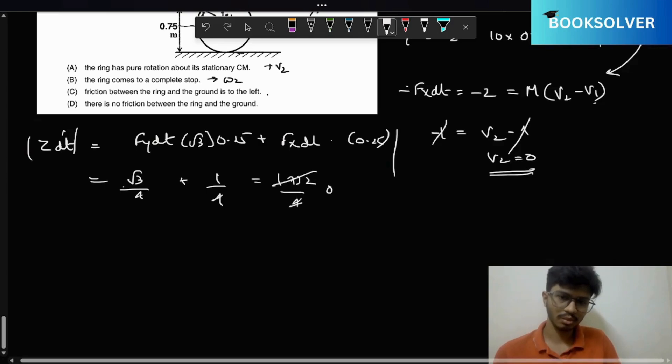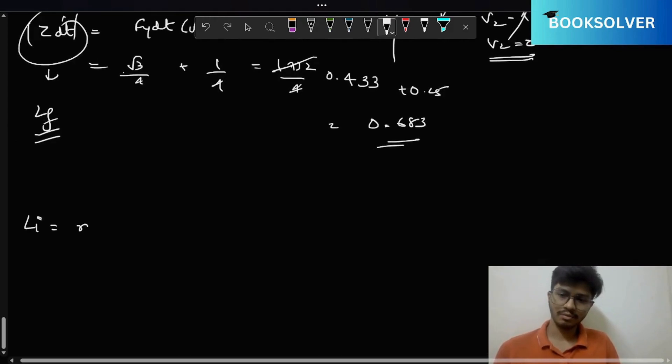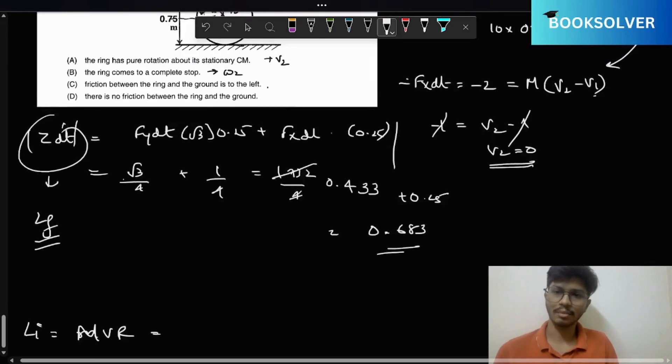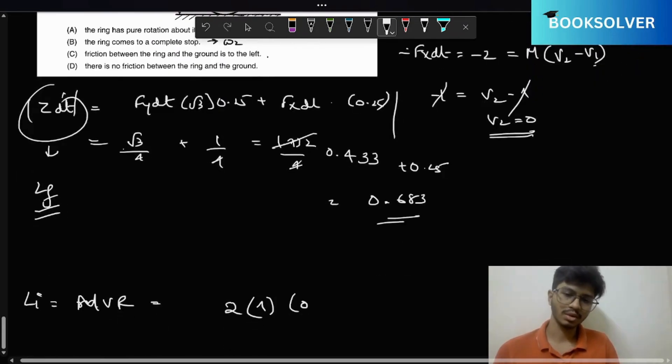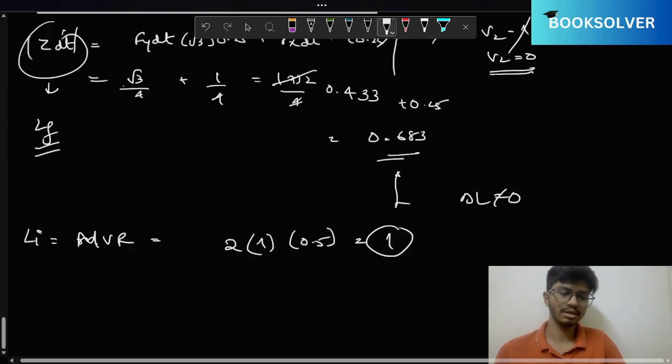So this is basically tau dt, this is basically your L final. And initially M v into r, so capital M is 2 into v is 1, r is 0.5, so it is basically 1. So delta L we can say is not equal to 0. It is equal to 0.317.